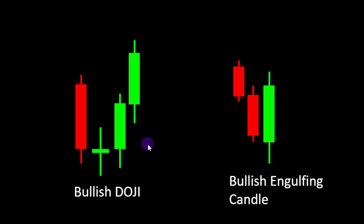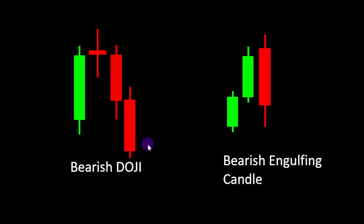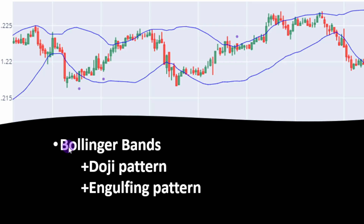These are examples of the bullish setup of these two patterns. We can also consider the bearish setups, where a doji is followed by a bearish candle, and in the case of the engulfing pattern, the engulfing candle has a bearish direction. These patterns would indicate a future downtrend. The way we use these patterns: first we wait for a price candle to close above or below the Bollinger Band lines. If we have a bullish pattern forming below the lower Bollinger Band line, we set a buying signal.